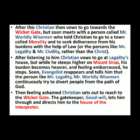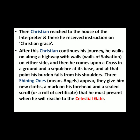Evangelist warns Christian not to do such things anymore. Christian obeys and reaches the Wicket Gate, where he finds a man named Goodwill, who shows Christian the right path to the house of the Interpreter. After reaching the house of the Interpreter, Christian is shown many things about how grace can cleanse sin from a man's heart. There he also meets two persons called Passion and Patience.